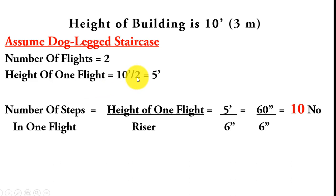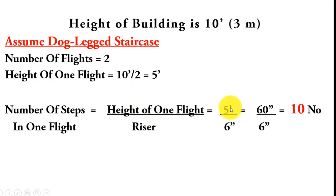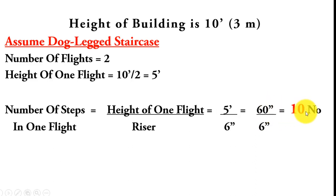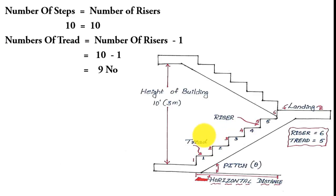The height of one flight equals the height of the building divided by the number of flights: 10 feet divided by 2 equals 5 feet. The number of steps in one flight equals the height of one flight divided by the riser. Converting 5 feet to inches gives 60 inches. 60 inches divided by 6 inches equals 10 steps per flight. For two flights, we require 20 steps total.